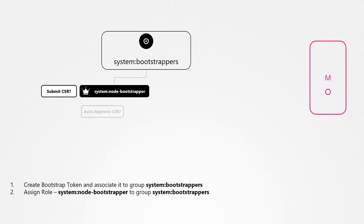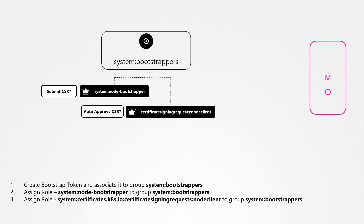So you can choose to allow these certificates to be automatically approved by associating another role to the group called system:certificates:certificate-signing-requests:nodeclient. With this role assigned to the system bootstrappers group, the CSR gets approved automatically as soon as it is submitted and the node becomes part of the cluster. Once the node joins the cluster, it becomes part of the system nodes group, and it no longer needs the bootstrap token.